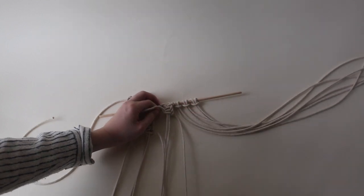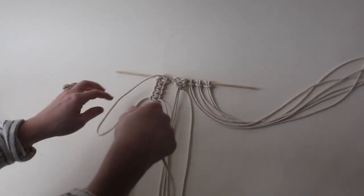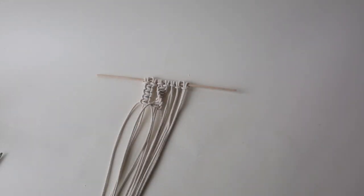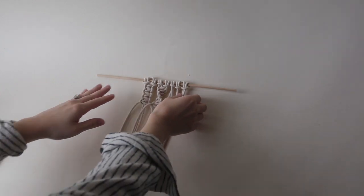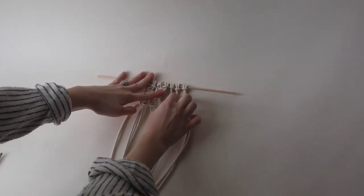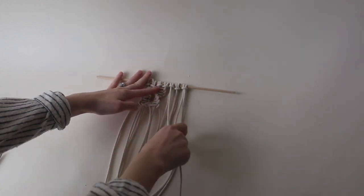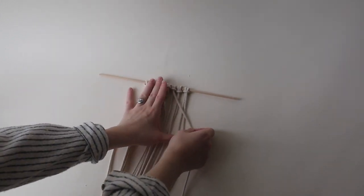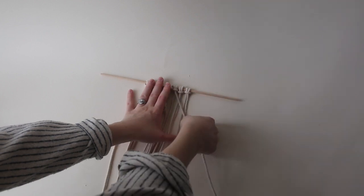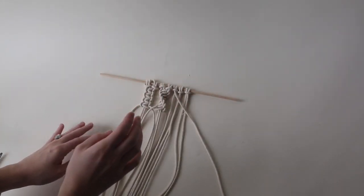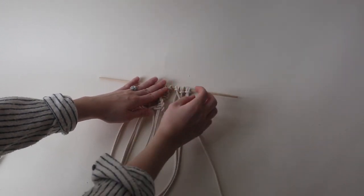The final macrame knot we're going to be doing on this macrame piece is the half hitch. With our final three that we have here, we're going to go ahead and take the far left cord and stretch it across in a diagonal pattern. Now you can do it straight across, you can do it diagonal. It's really up to you. I like it diagonal. I think it's a little more interesting.